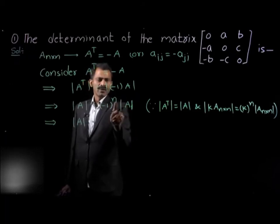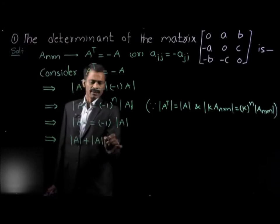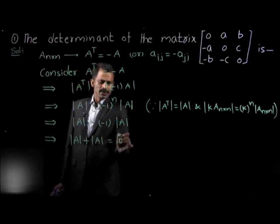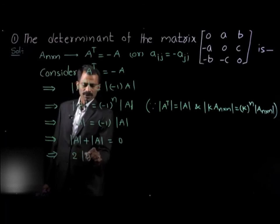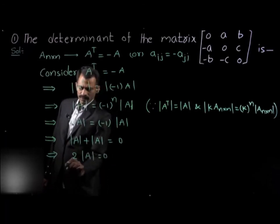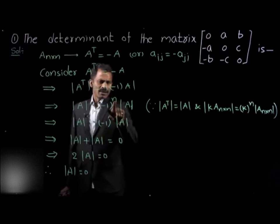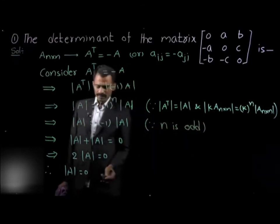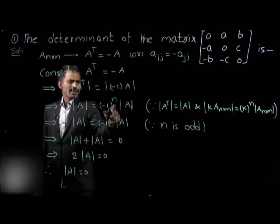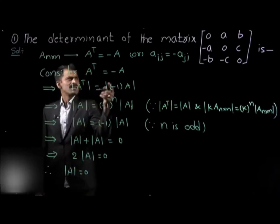We apply this for odd order only. If n is odd, (−1)ⁿ becomes −1, so determinant of A equals −1 times determinant of A. Bringing everything to one side: determinant of A plus determinant of A equals 0, giving 2 times determinant of A equals 0. Therefore, determinant of A equals 0. So for odd order, the determinant of the skew symmetric matrix is 0. The given matrix determinant value is also 0.